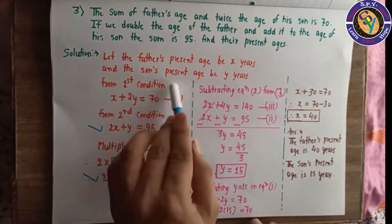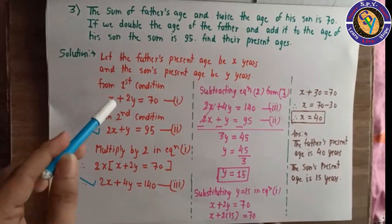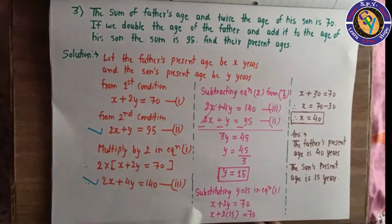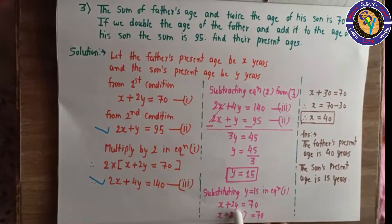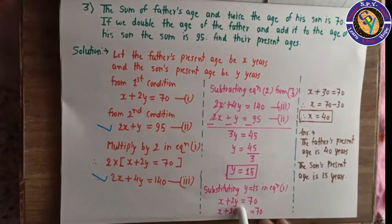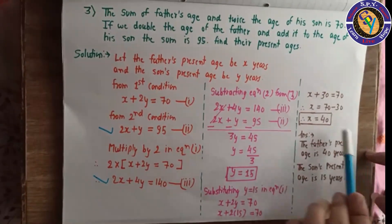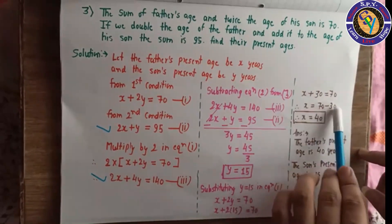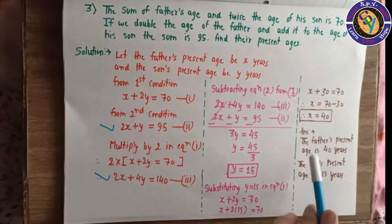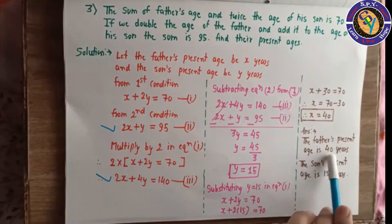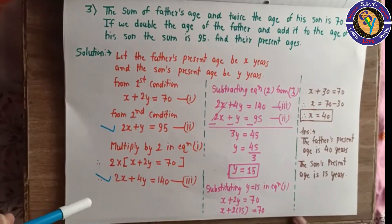So the son's age y equals 15. Substituting y equals 15 into equation 1: x plus 2 into 15 equals 70, so x plus 30 equals 70, therefore x equals 40. The father's present age is 40 years and the son's present age is 15 years.